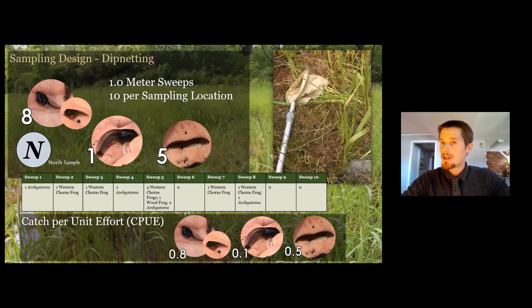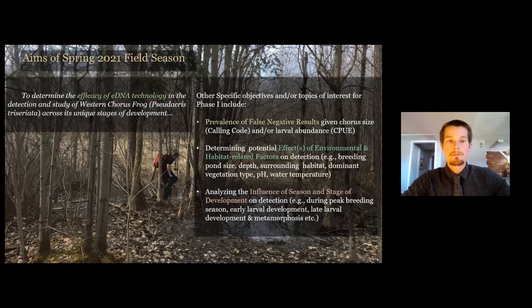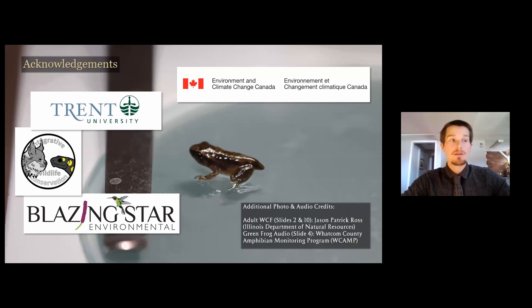Catch per unit effort for western chorus frog varied widely across sampling sites, from as low as 0.05 to as high as 6.7 catches per effort. The study will investigate the prevalence of false negative samples, the effect of environmental variables on detectability using eDNA, and the relationship between temporal factors and eDNA detection rates. Improved monitoring must consider this amphibian across its unique stages of development, and eDNA may allow us to do just this. Gratitude is expressed to funders at the Canadian Wildlife Service.